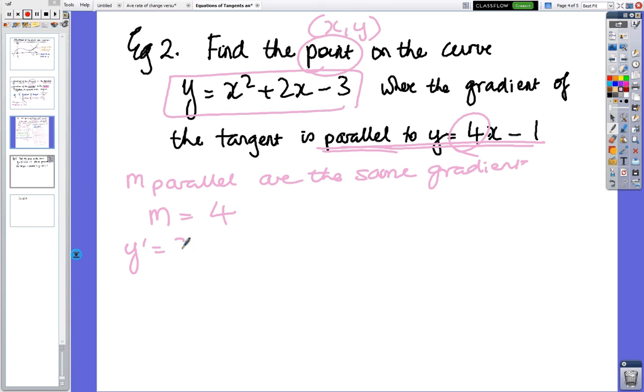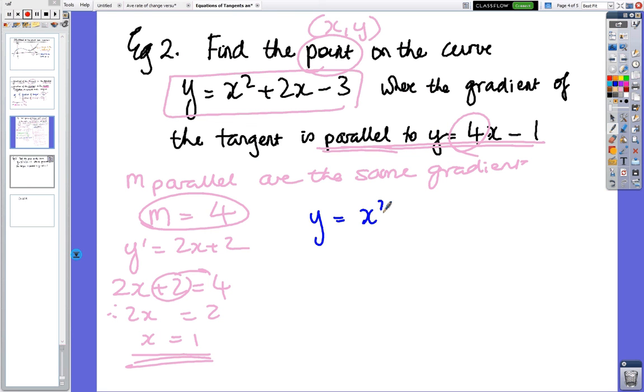Now, what we do now is look at the derivative. So y prime equals 2x plus 2, and that's when the 4 comes back into the game. So 2x plus 2 equals 4. So 2x equals 2. Just subtract 2 from both sides. So x equals 1. So I've got the x value. Now we're going to find the y value. So y equals x squared plus 2x minus 3 equals 1 squared plus 2 times 1 minus 3. Because 1 plus 2 minus 3 equals 0.